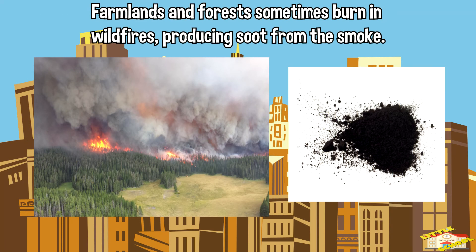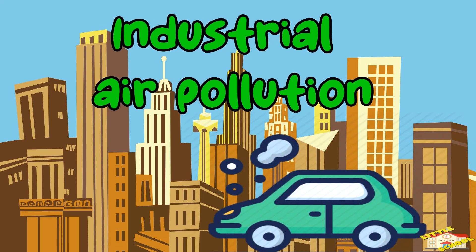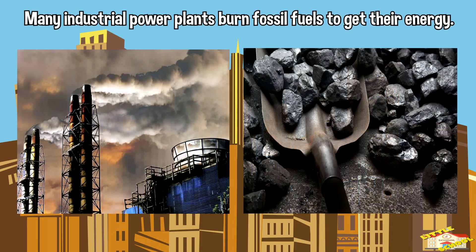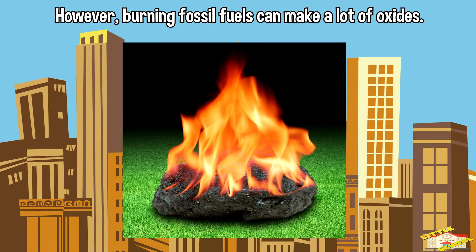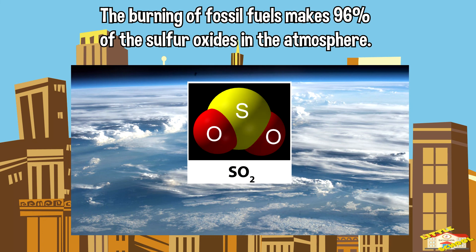Farmlands and forests sometimes burn in wildfires, producing soot from the smoke. Let's talk about industrial air pollution. Many industrial power plants burn fossil fuels to get their energy. However, burning fossil fuels can make a lot of oxides. The burning of fossil fuels makes 96% of the sulfur oxides in the atmosphere.